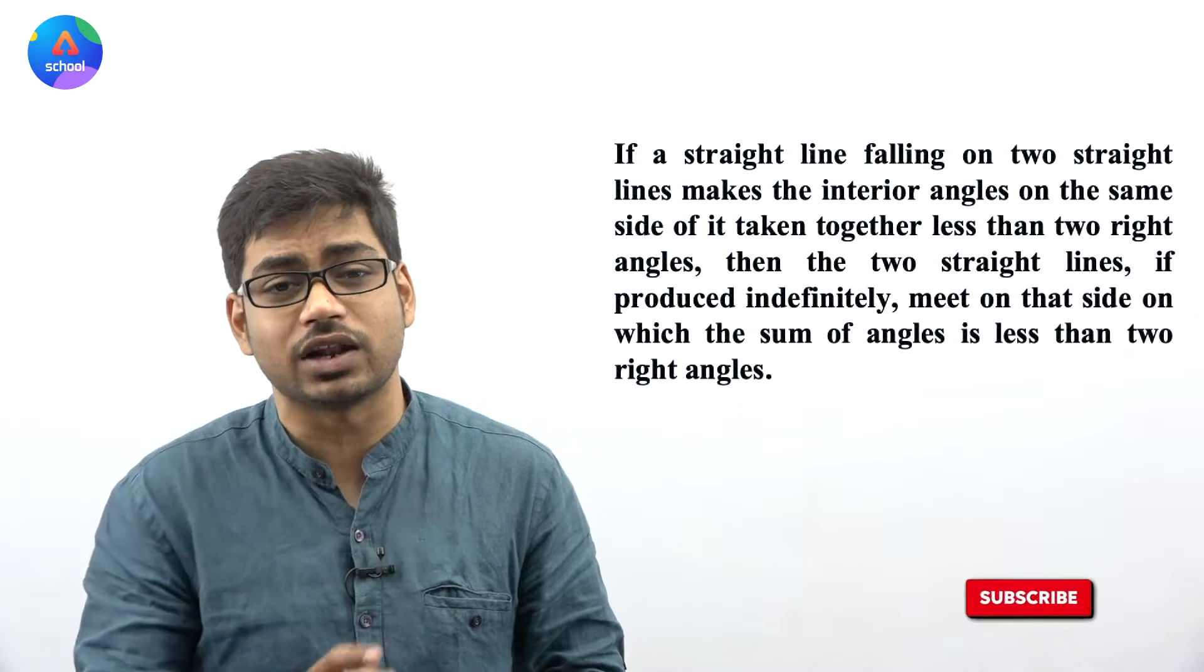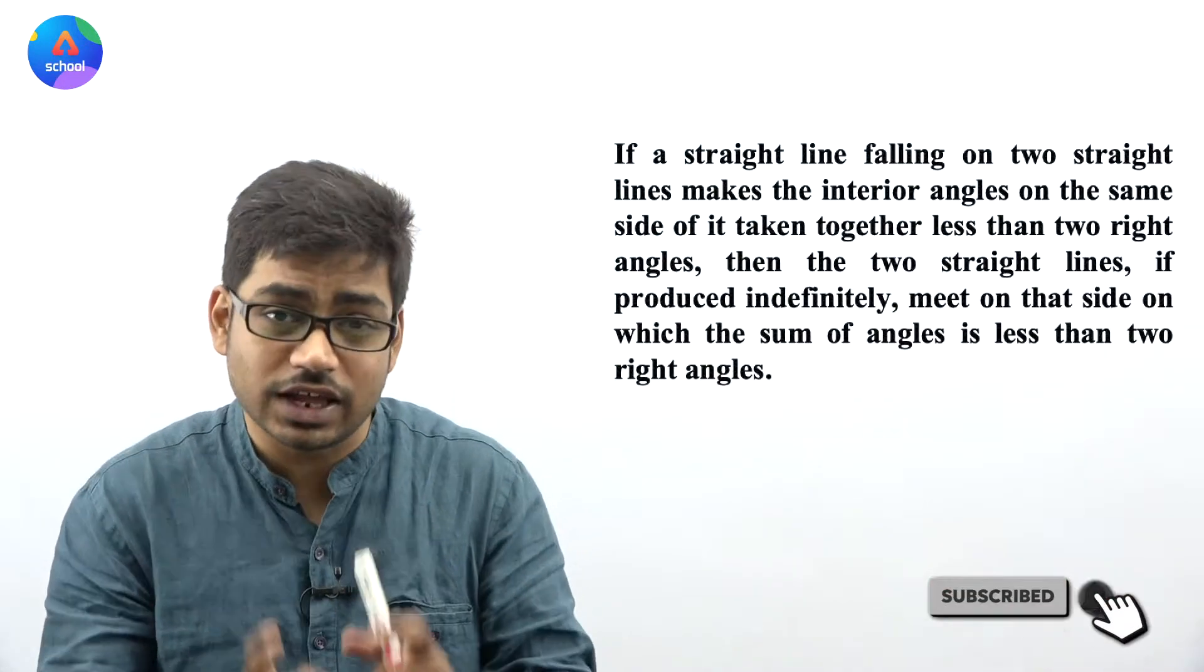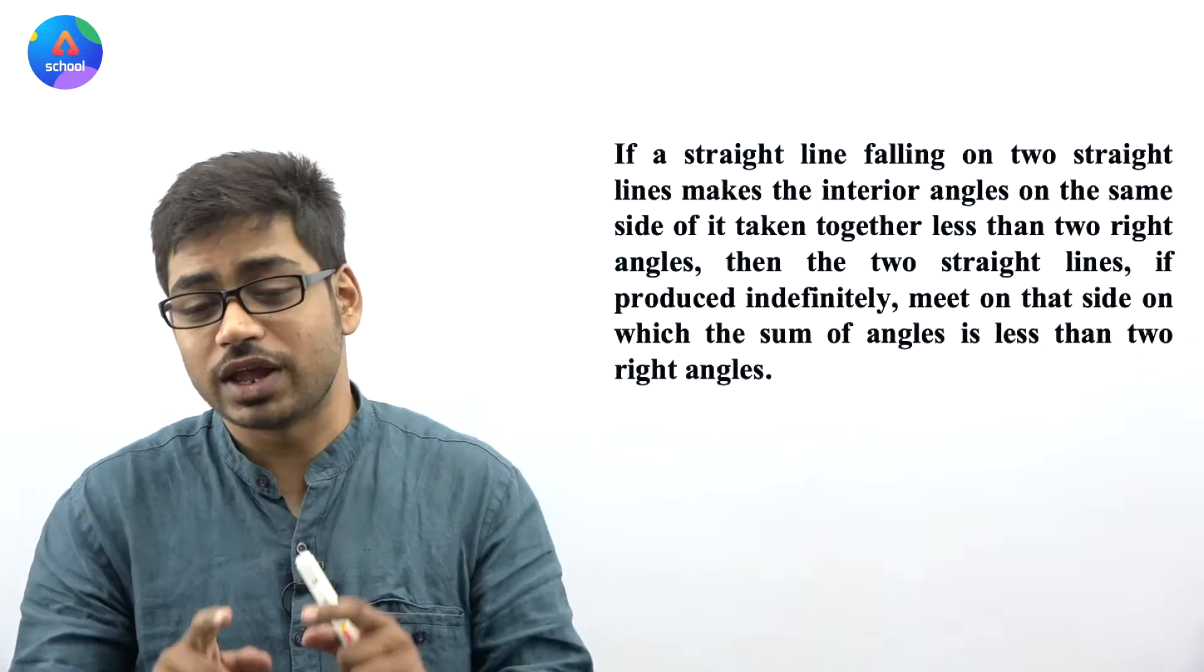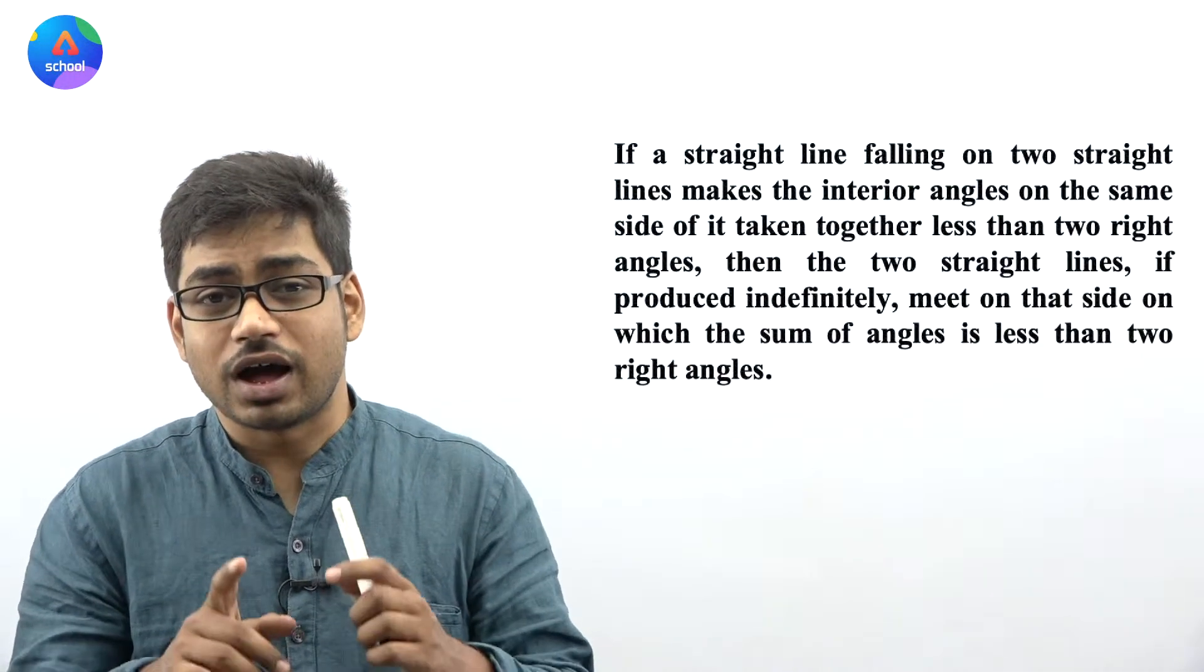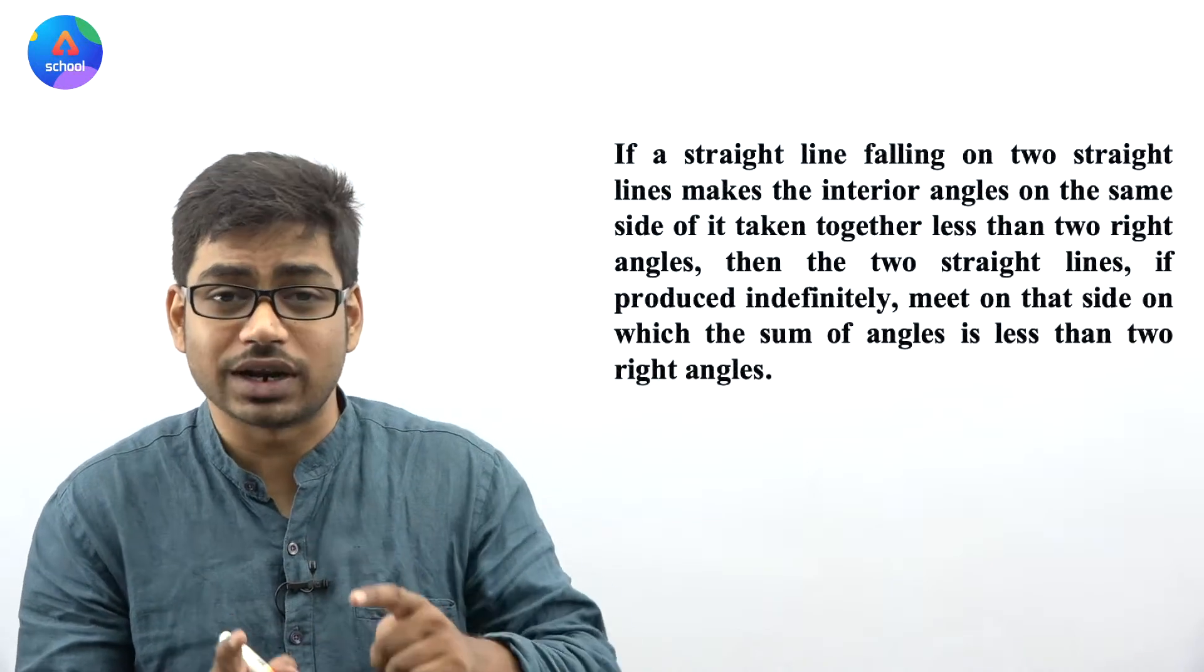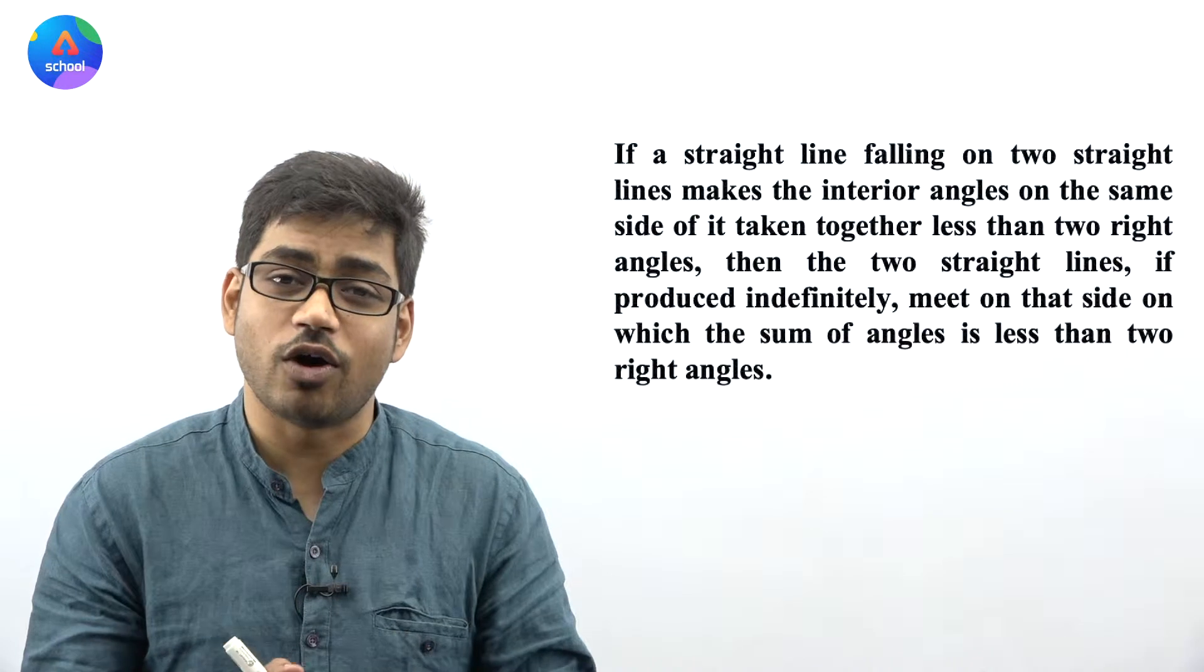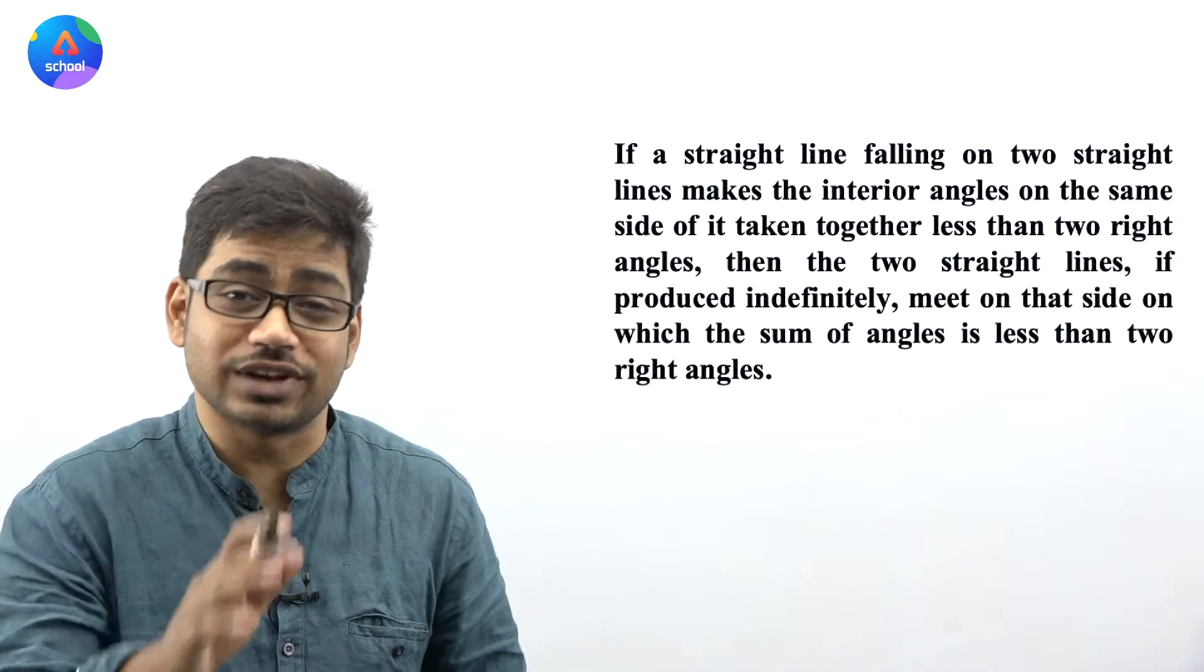First, let's look at the original statement: if a straight line falling on two straight lines makes the interior angles on the same side of it taken together less than two right angles, then the two straight lines if produced indefinitely meet on that side on which the sum of angles is less than two right angles.